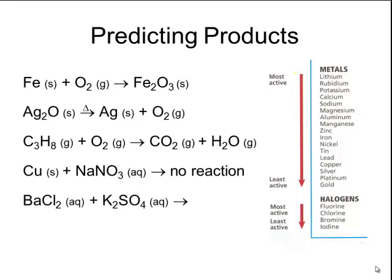This last reaction is an example of a double displacement reaction. I can tell that it's a double displacement reaction because I have two compounds as reactants on the left-hand side of the arrow. In order to predict my products, I need to look at the ions that are on the outside of each reactant — in this case barium and chloride — and the ions that are on the inside of the reactants, which in this case is potassium sulfate.